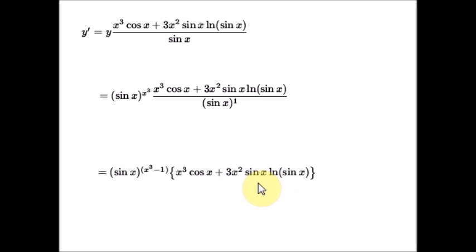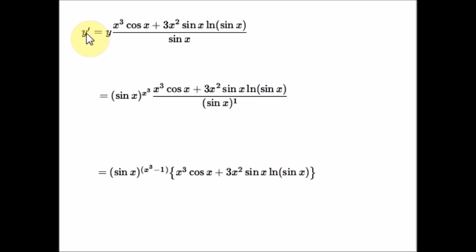These questions look very complicated initially, but when you analyze the question you can understand which rules to apply. Whenever you get a variable in the exponent's place, it is better to start by taking the natural log on both sides. According to the nature of the expression, apply the product rule or quotient rule, and if there is a function within another function, apply the chain rule. Simplify your answer as much as possible, and make sure y dash is isolated on one side of the equation.